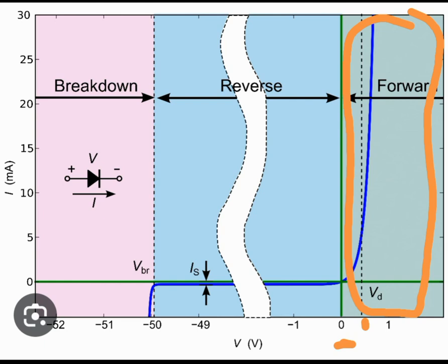On the other hand, when you apply a negative voltage across a PN junction, we start with zero and go to minus one, minus two, and so on.